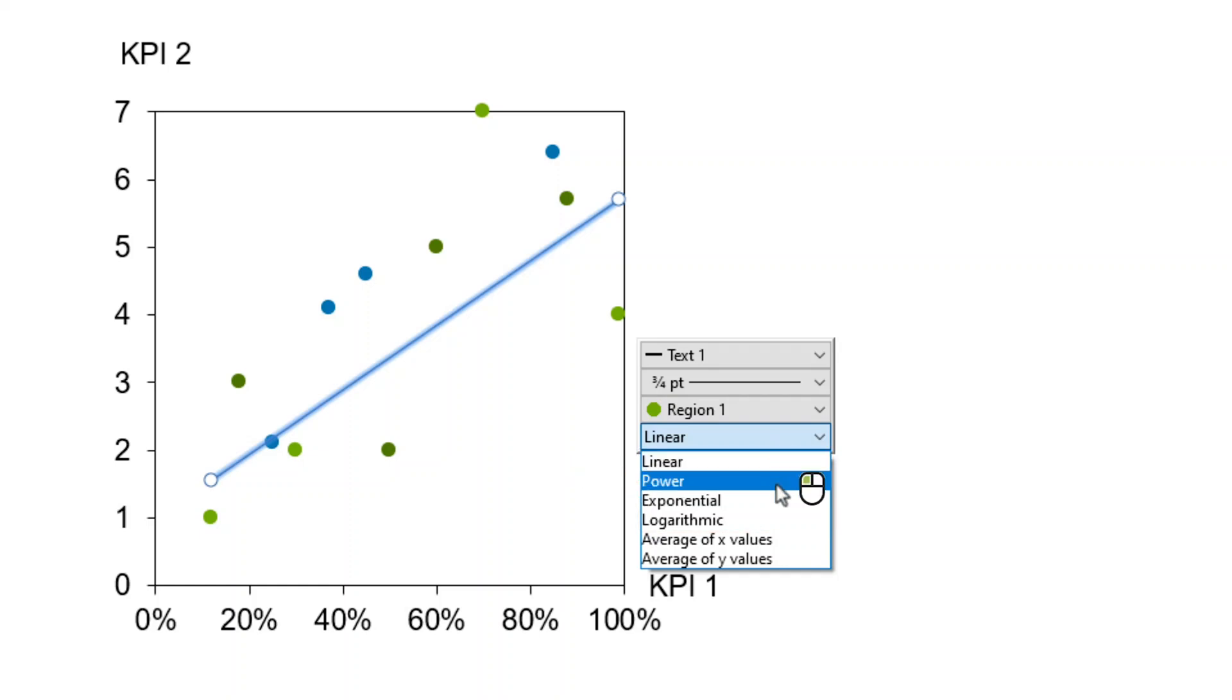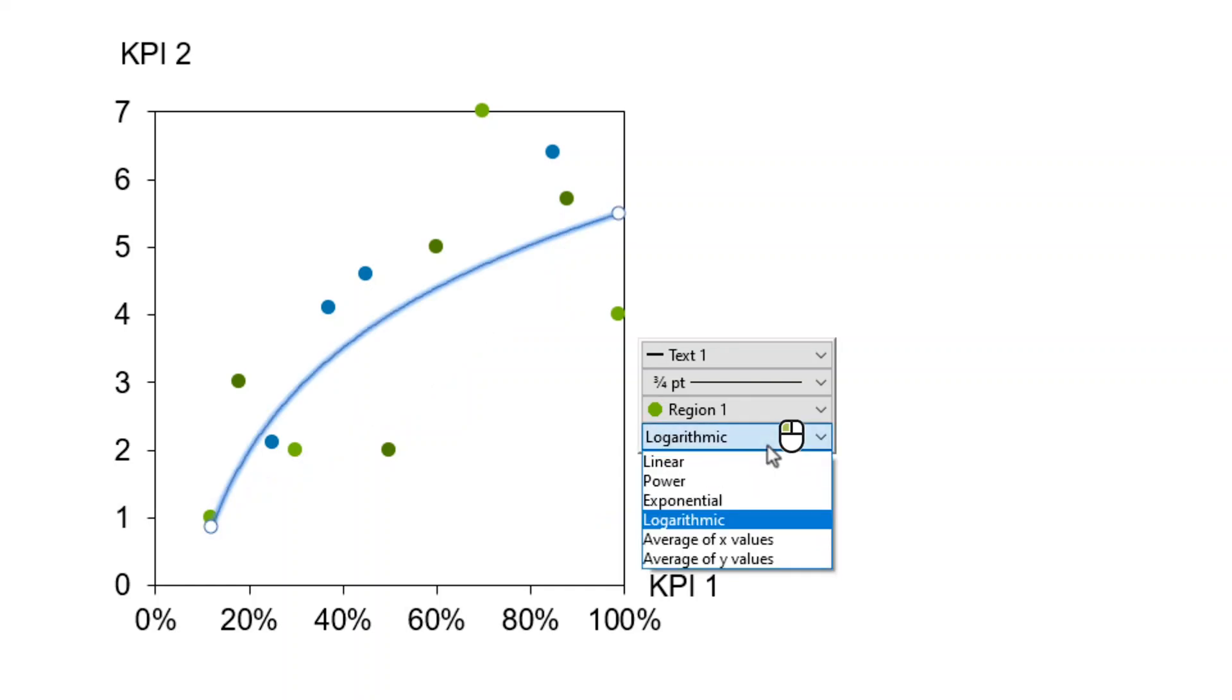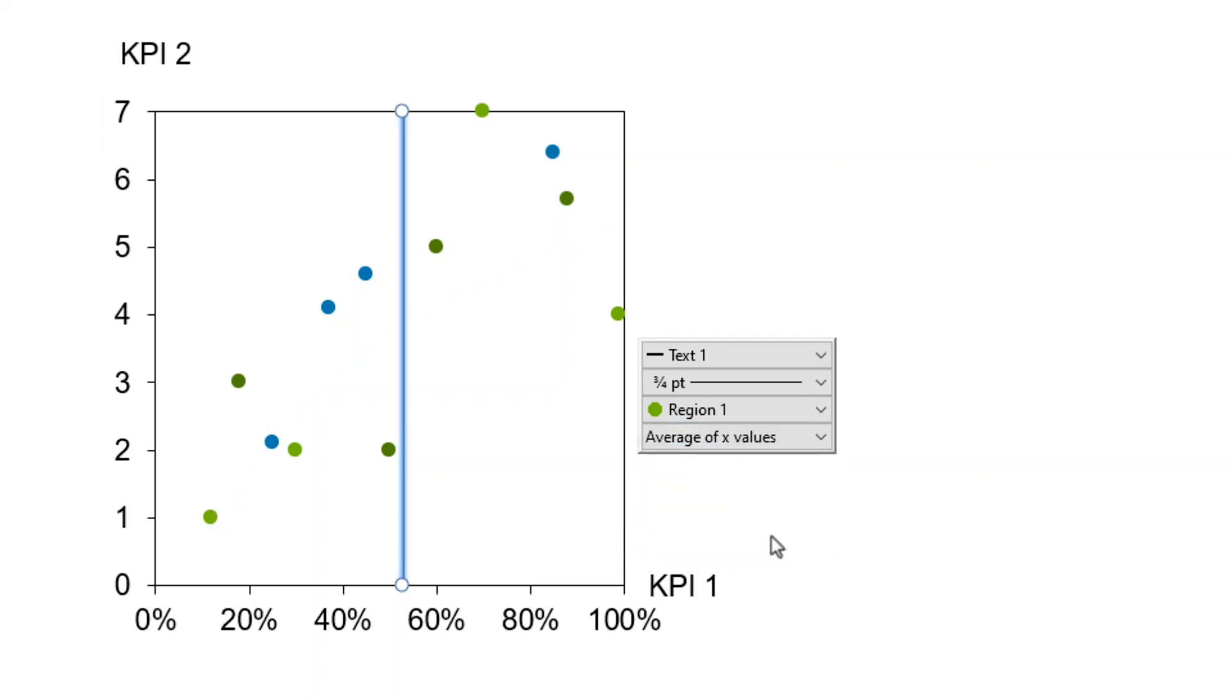The power type fits best when there is a power law relationship between Y and X values. Choose the exponential type when there is an exponential relationship, or the logarithmic type when your data has a logarithmic relationship. You can also set a trendline representing the average of X values or Y values by picking the corresponding option from the menu.